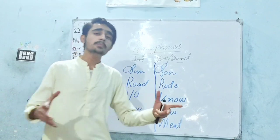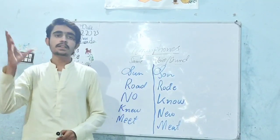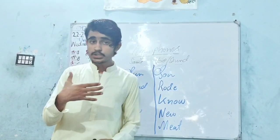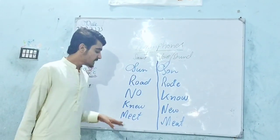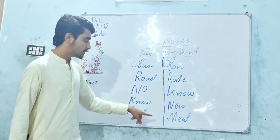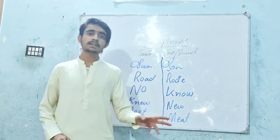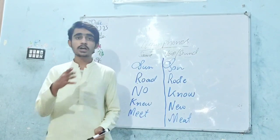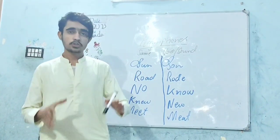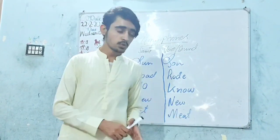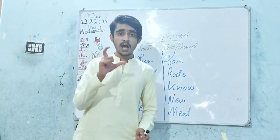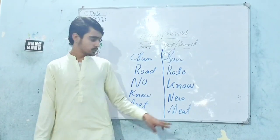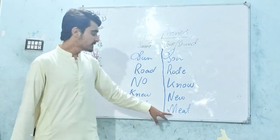Meet means milna. For example: 'I'll meet you today' — that means I will meet you, milonga. And meat means gosht. For example, mutton is the meat of a goat. We use meat for gosht: 'I bought half kg meat from the shop' — here meat means gosht.